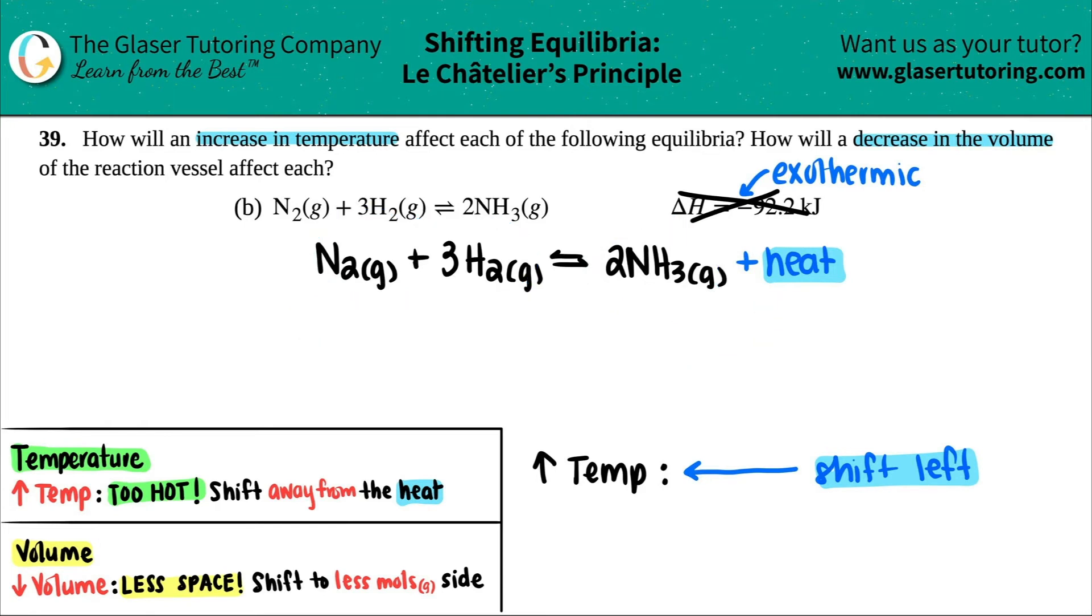Next one, we're decreasing the volume. So according to Le Chatelier's principle, if you are lowering the volume, remember volume is just talking about the space inside of a container, or in this case, a reaction vessel. If you're decreasing that space, if you're lowering the volume, you have less space. So if you have less space in an area, you don't want a lot of stuff in it. You want less moles. So you'll always shift to the less mole side, but just be careful. It's always the less moles of the gas. So just make sure, but all three of these are gases. So I'm going to take all three of them into consideration.